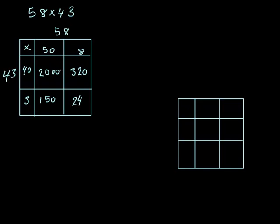This time I need to add four numbers up: 2000, 320, 150, and 24. So I add them up on the side. I added these two numbers up and I add them up and I put the result here: 174. So 150 and 24 make 174.